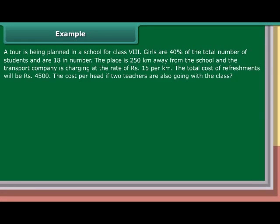Example: A tour is being planned in a school for class 8. Girls are 40% of the total number of students and are 18 in number. The place is 250 km away from the school and the transport company is charging at the rate of Rs. 15 per km. The total cost of refreshments will be Rs. 4,500. Find the cost per head if two teachers are also going with the class.